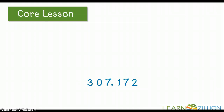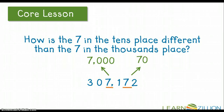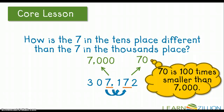Let's take a look at a similar problem. In the number 307,172, how is the 7 in the tens place different than the 7 in the thousands place? The 7 in the thousands place is worth 7,000 and the 7 in the tens place is worth 70. Every time you jump a place to the right, you are dividing by 10. So 70 is 100 times smaller than 7,000 because we jumped two places, dividing by 10 and then by 10 again.